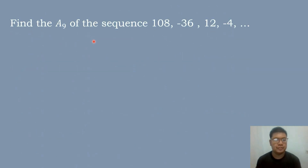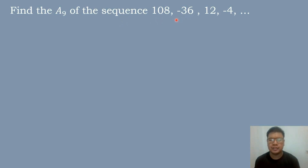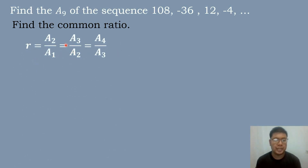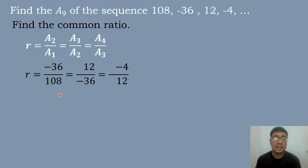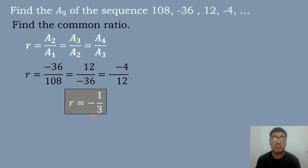Let's have our second example: find a sub 9, or the 9th term, of the sequence 108, negative 36, 12, negative 4. We use the formula r equals a sub 2 over a sub 1, equals a sub 3 over a sub 2, equals a sub 4 over a sub 3. Substituting: negative 36 over 108 is negative 1 over 3, 12 over negative 36 is negative 1 over 3, and negative 4 over 12 is negative 1 over 3. So the common ratio is negative 1 over 3.